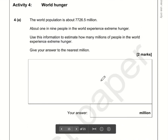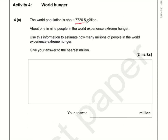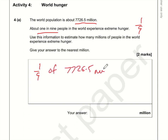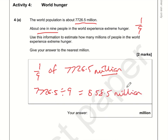For question 4, one in nine people go hungry, so we want one-ninth of the world population, which is 7,726.5 million. Ignoring the word million for now: 7,726.5 divided by 9 is 858.5 million. To round to the nearest million, we look at the first decimal place — it's a 5, so we round up. The answer is 859 million.